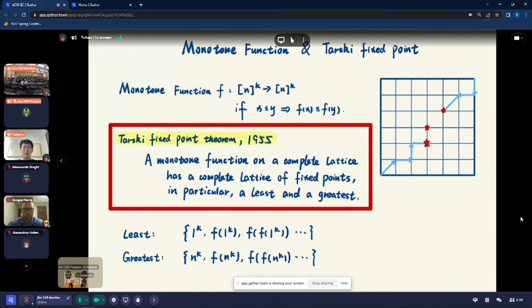Tarski fixed point theorem has extensive applications in game theory, especially for establishing the existence of pure Nash equilibrium in supermodular games. In this grid model, I can quickly show you why there is a least fixed point and greatest fixed point. For example, if we start from the least point, which is 1 to the k, then if it's a fixed point, we are done. Obviously, it's the least fixed point.